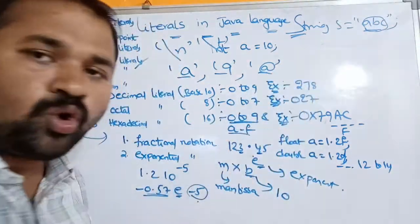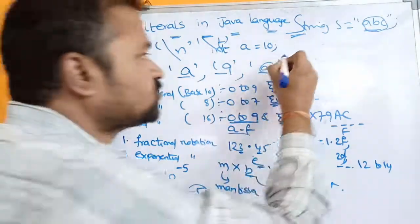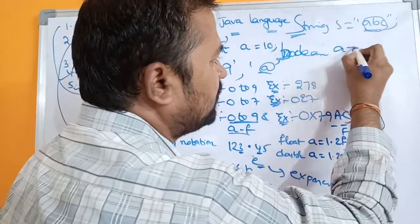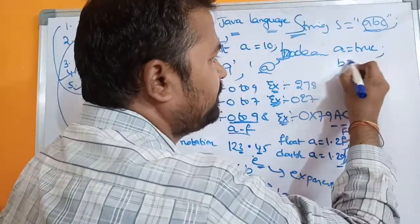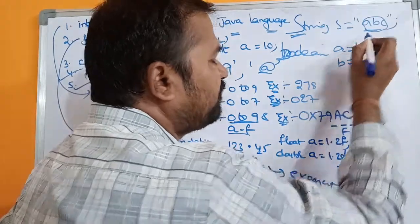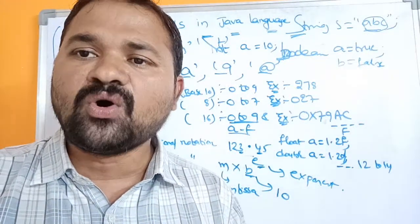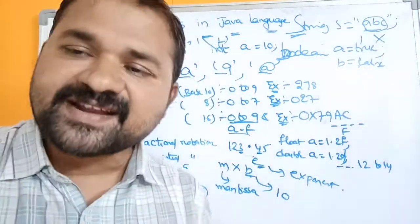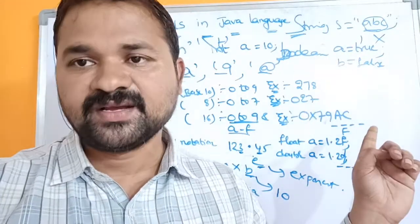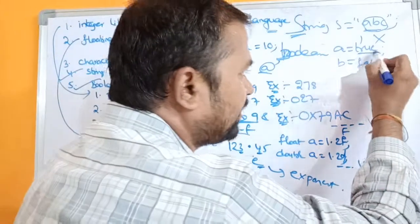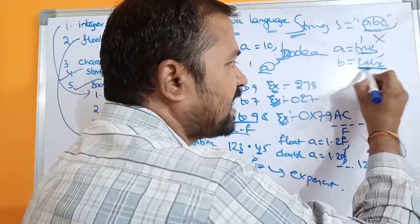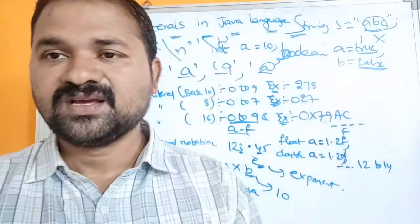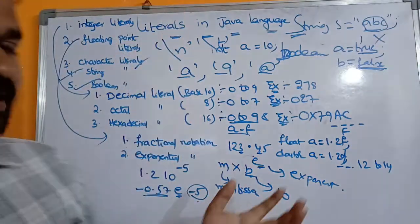The fifth and last type is boolean literal. A boolean can hold either true or false — for example, 'boolean a = true' or 'boolean b = false'. Importantly, true and 1 are different, and false and 0 are different in Java. Writing 'boolean a = 1' will cause a compiler error, because 1 is an integer. To represent true or false, you must write the keywords true or false explicitly.